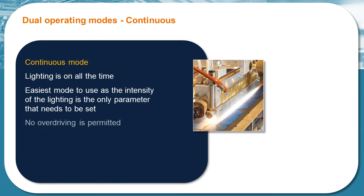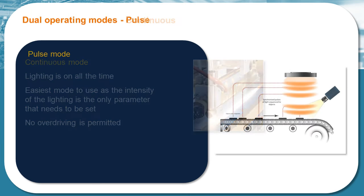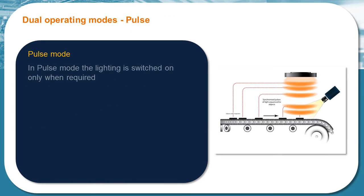Note that no overdriving is permitted in this mode. In pulse mode the lighting is switched on for a fixed time and only when required. The controller receives a trigger signal when the camera exposure is about to start.